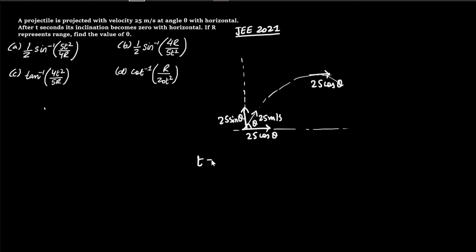The time taken to reach the maximum height is given by u sin theta over g. Now in projectile motion, the time taken to go up is same as the time taken to come down. So this means that the total time taken by the body to complete its trajectory is 2u sin theta by g.